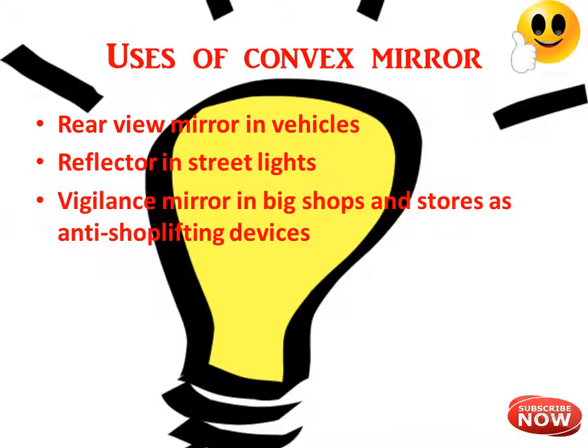Coming to the uses of convex mirrors — they are used as rear-view mirrors in vehicles because they form an erect and highly diminished image irrespective of the position of the traffic behind, allowing the driver to view a larger area. They are also used as reflectors in street lamps as they diverge light rays over a wide area, and as vigilance mirrors in departmental stores and big shops as anti-shoplifting devices. I hope you are enjoying the video — stay tuned for Part 3, and thank you for watching.